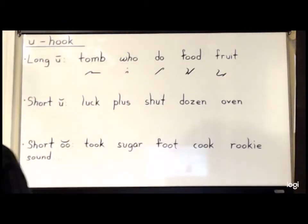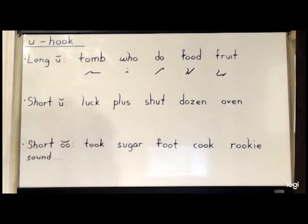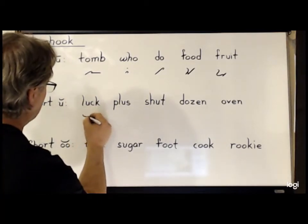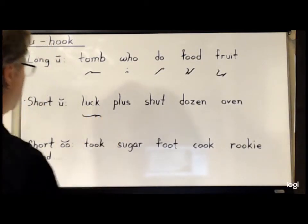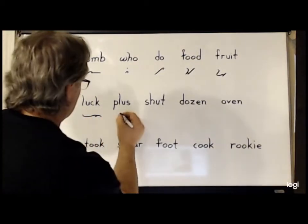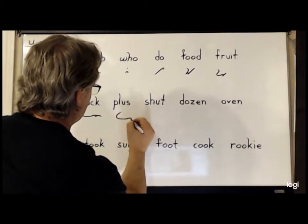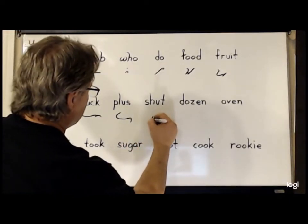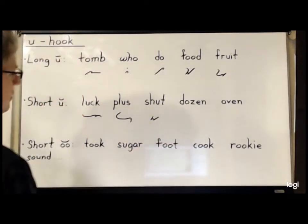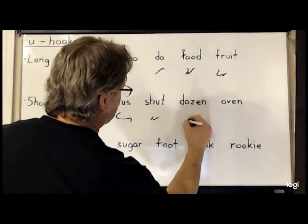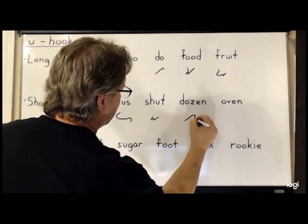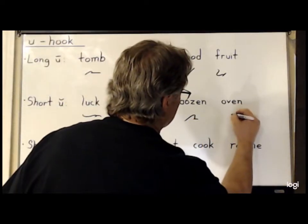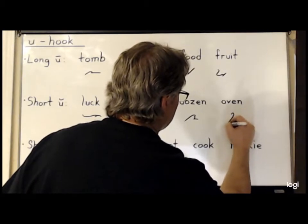For the short U sound, still use the U hook in most cases. So for the word 'look', it will be L-U-K. For 'plus', P-L-U-S. For 'shut', it is S-H-U-T. For 'dozen', it is D-U-S-N. And finally, 'oven' is the U hook, the V, and then the N.